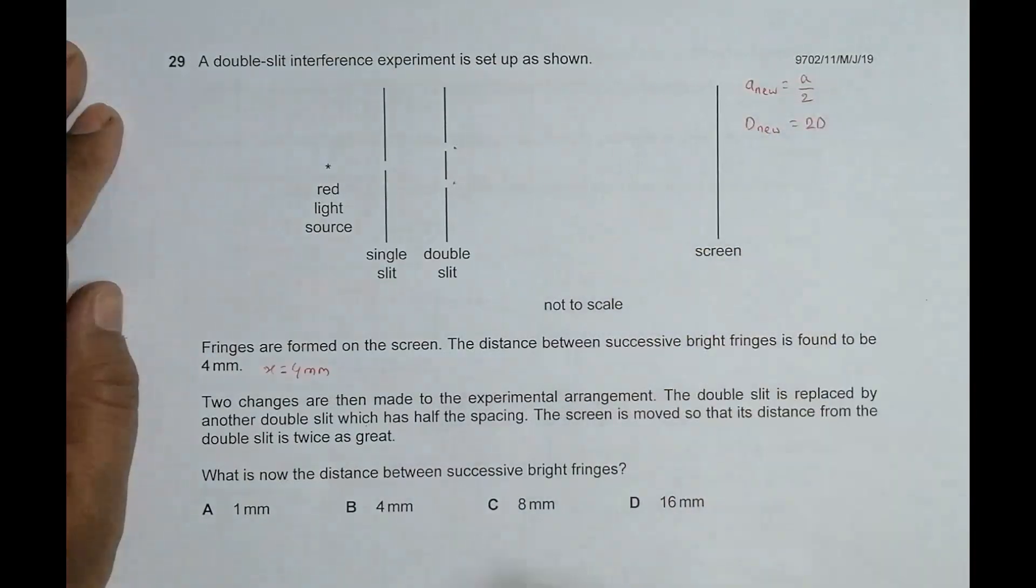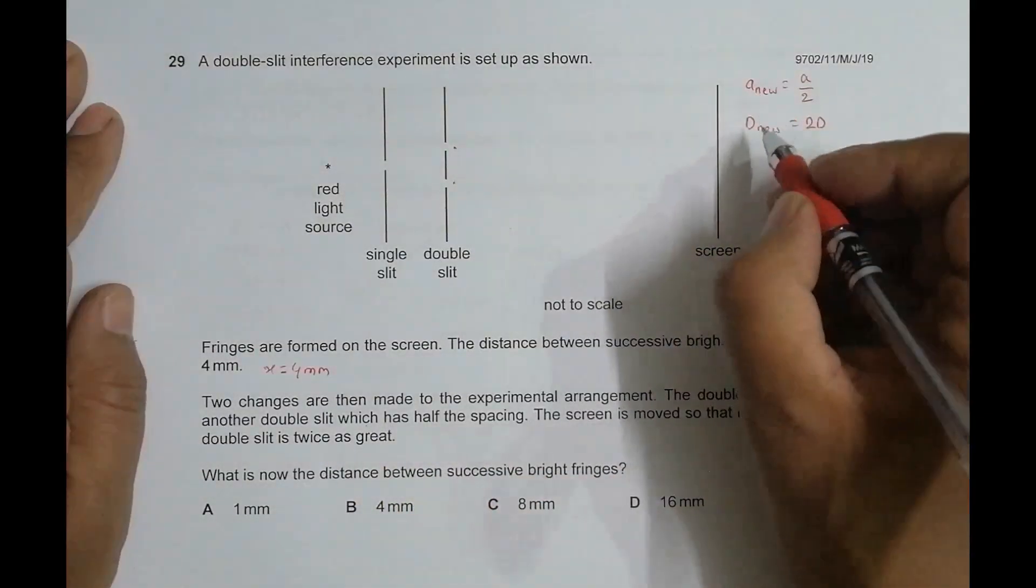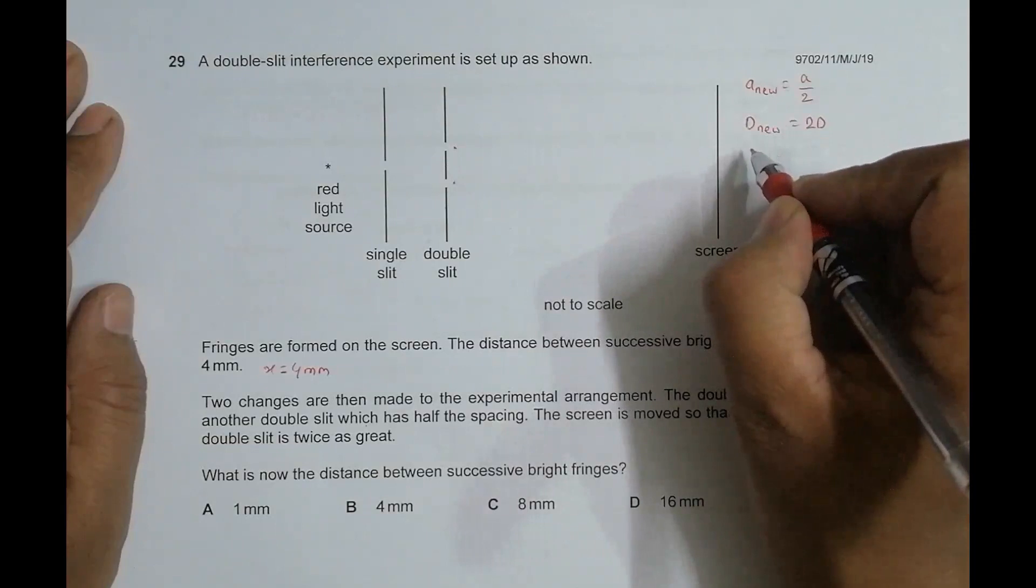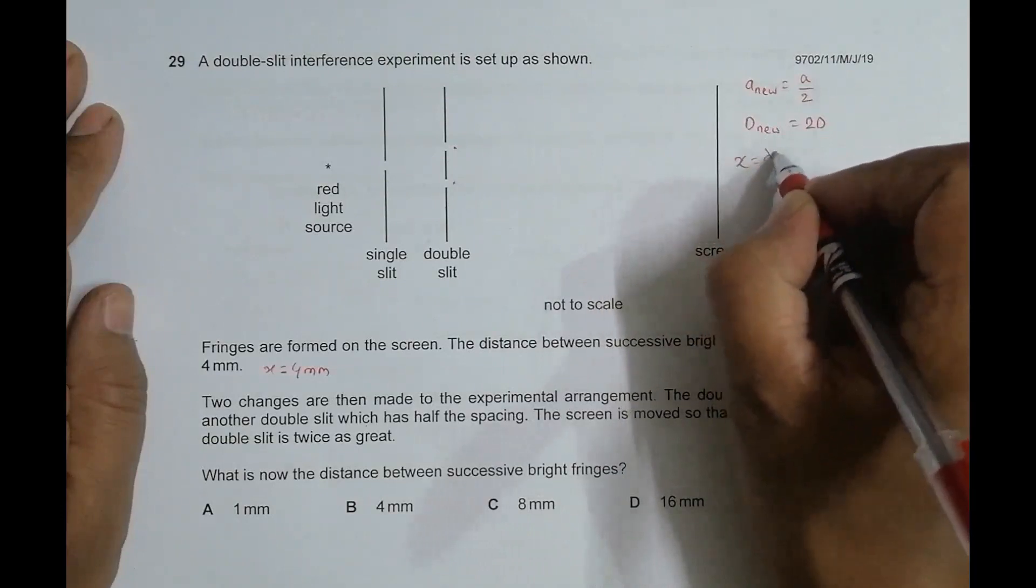So that means initially what we have is the distance between successive bright fringes, the fringe width, which will give us x is equal to lambda D by a. This is the initial value.